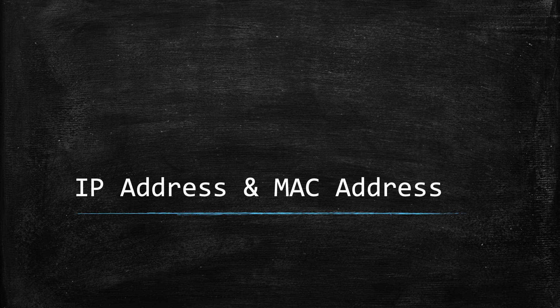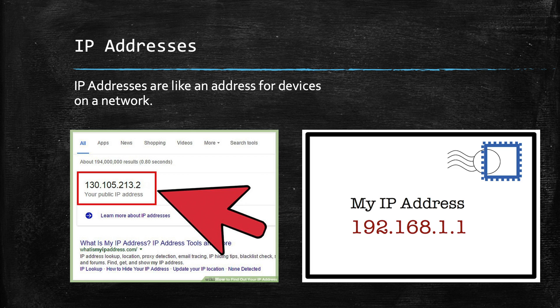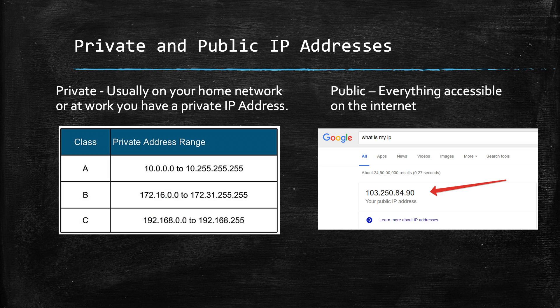IP addresses are like addresses for devices on your network — they can be internal or external. If you want to send something to Google Drive, you need to know the IP address to send it to. Private IP addresses are for local area networks — your home network, enterprise, or organization. Multiple different businesses can use the same private IP ranges and they won't collide with each other because those ranges are reserved for internal use.